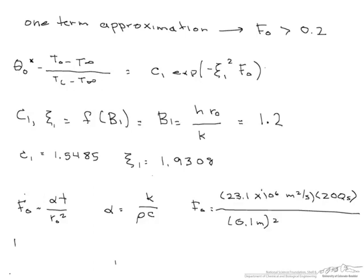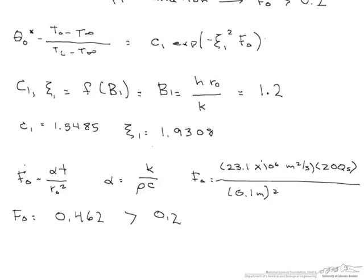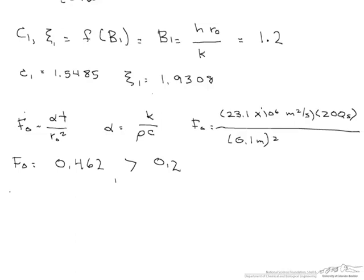And we divide this all by 0.1 meters squared. And when we calculate our Fourier number, we find that it's 0.462, which is greater than 0.2, which means that we can go ahead and use that one term approximation.